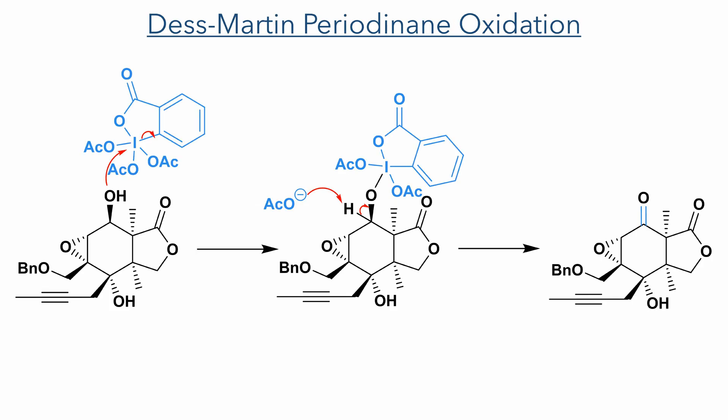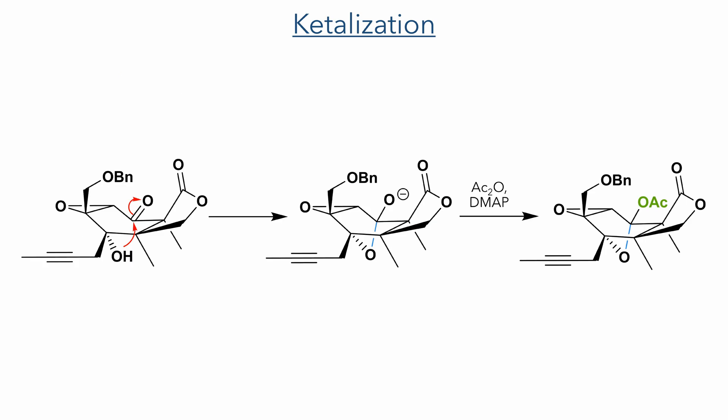It was important at this stage to trap the molecule in the boat conformation using an oxidation-ketalization strategy. First, the secondary hydroxyl group produced by the Payne rearrangement was oxidised using Dess-Martin periodinane, involving reaction of the alcohol with the hypervalent iodine group and abstraction of the geminal proton to produce a ketone. With this ketone installed, an intramolecular reaction could occur between the tertiary alcohol and the ketone to reversibly form an oxyanion, which was trapped using acetic anhydride to form an acetate ketal and lock the molecule into the boat conformation.